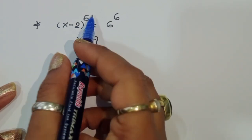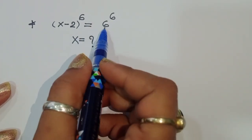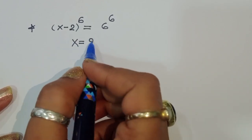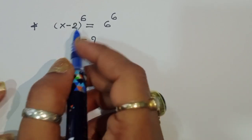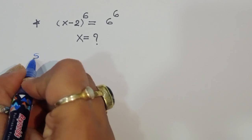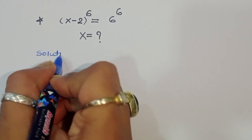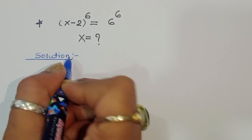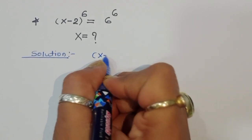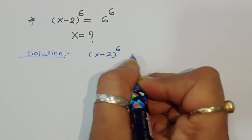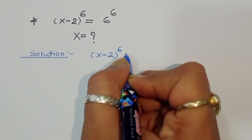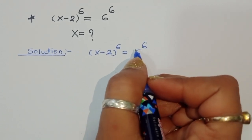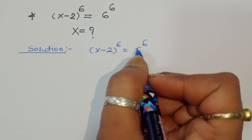The question is: given (x minus 2) power 6 is equal to 6 power 6, we have to find out the value of x. Let's see the solution. x minus 2 power 6 is equal to 6 power 6 — this is the question, so we can convert this.